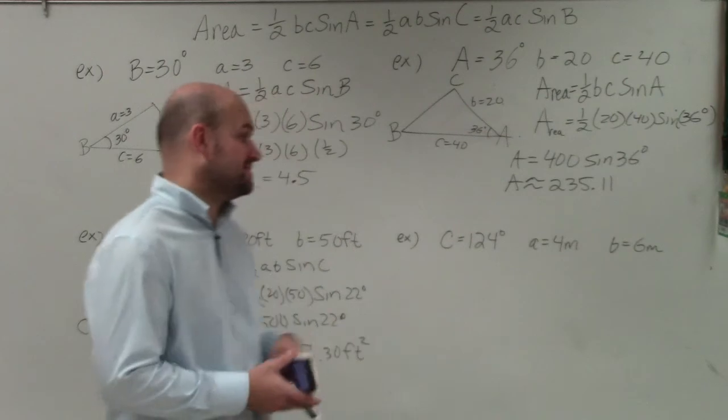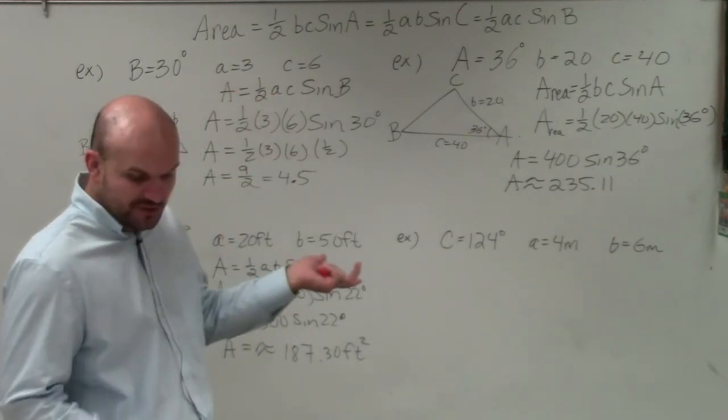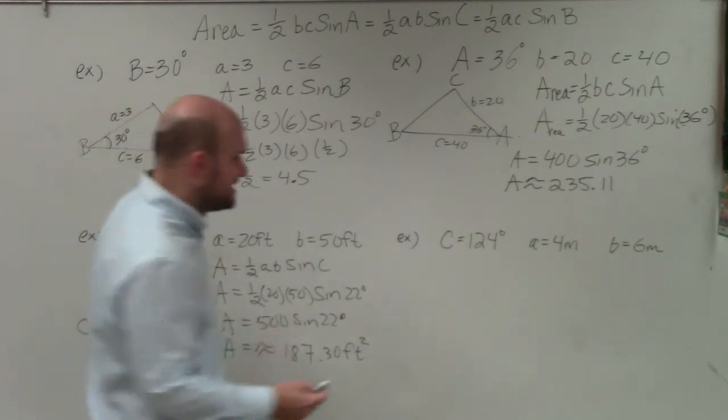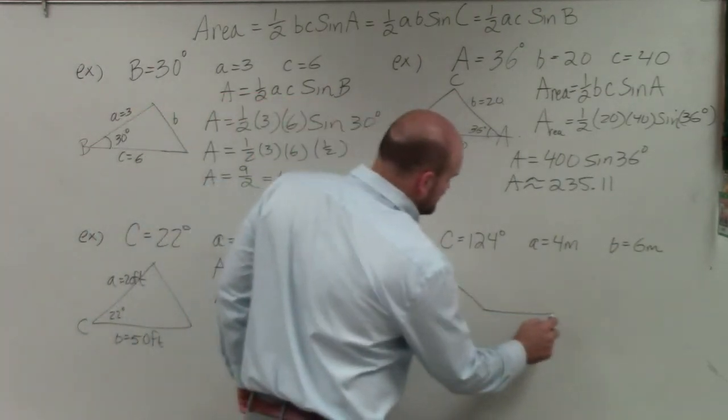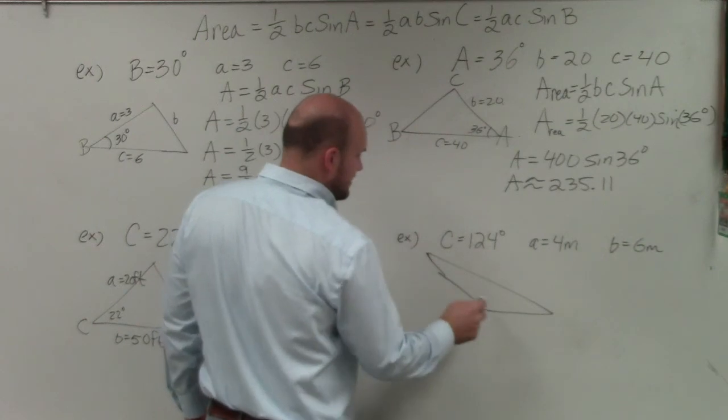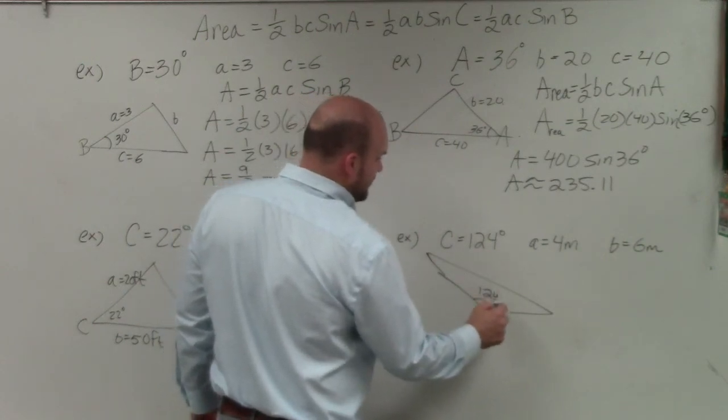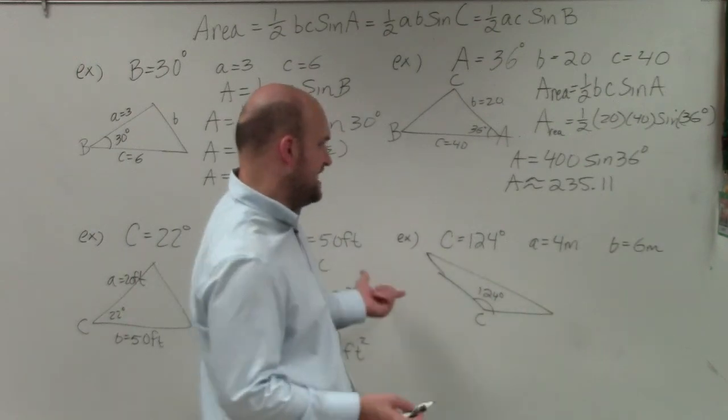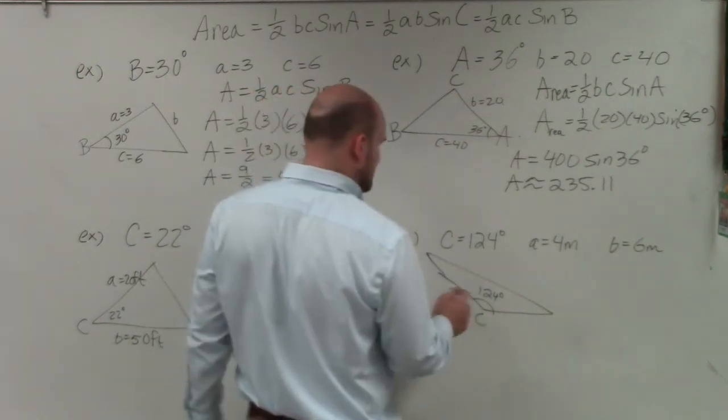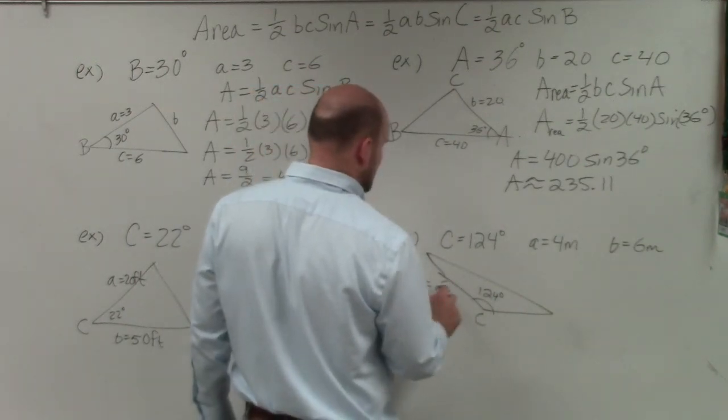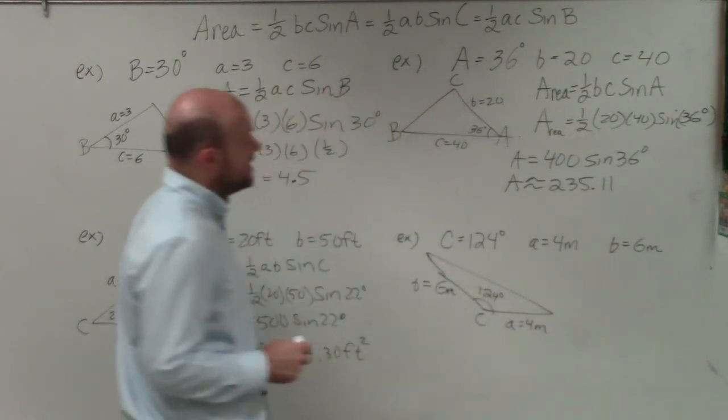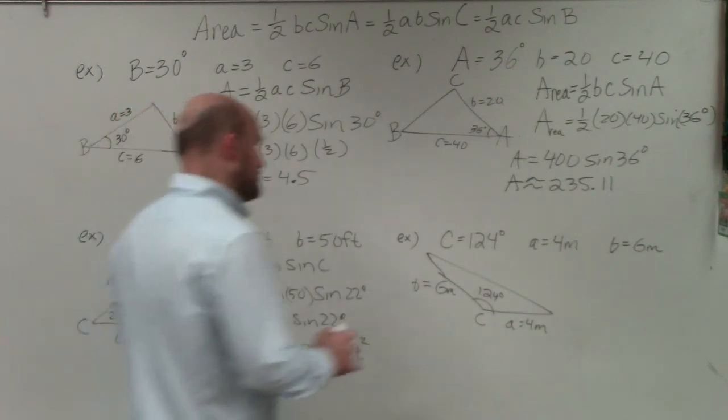Now on this last one, this one's kind of interesting. We can see we have an obtuse angle. So we have to draw a triangle that has an obtuse angle. All these triangles have not had an obtuse angle. So just draw an obtuse triangle. It doesn't need to be perfect. So we'll call this 124 degrees, and we'll call that C. You can see A and B are pretty close in length. But we'll just call this one B, and this one A. And again, notice we have measurements this time.